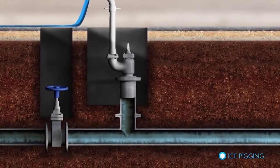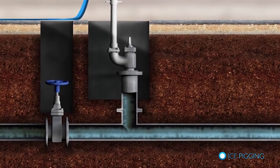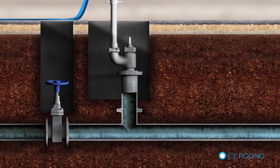On site, we connect the ice delivery unit using standard fittings. The pipe is then isolated from the mains pressure by closing valves and removing any flow.